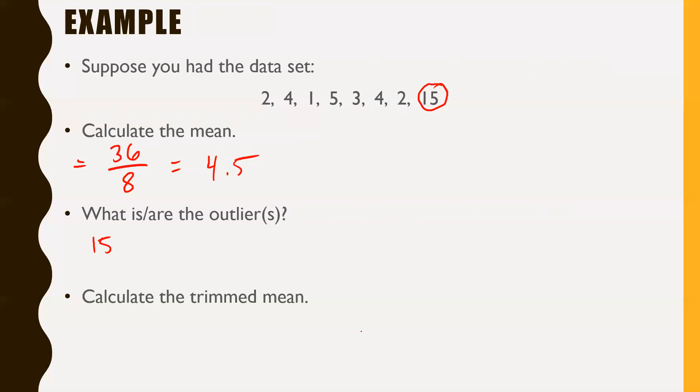Calculate the trimmed mean. It's important to have these numbers in proper order first. So I'm going to write these out in order: 1, 2, 2, 3, 4, 4, 5, 15.